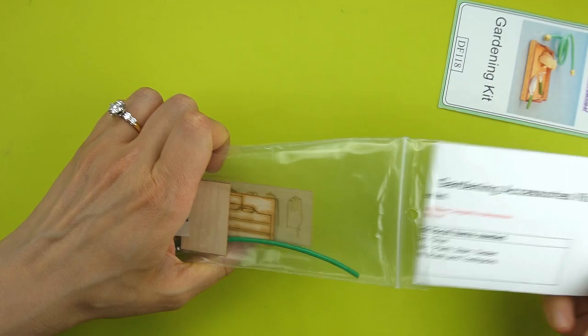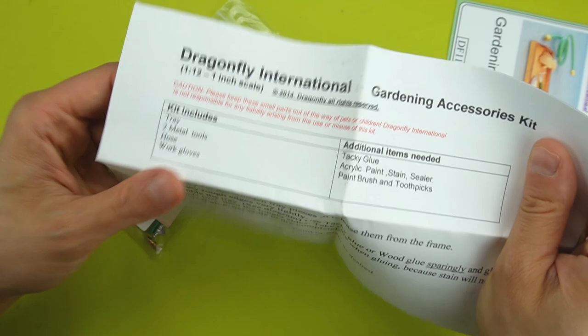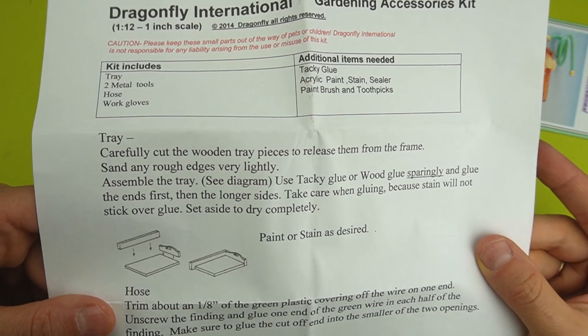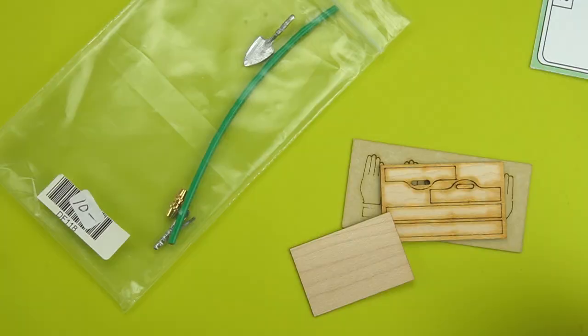I bought this kit for $10 at my local dollhouse store. I'll leave a link in the description. It comes with two metal tools, a tray, a hose, and some work gloves. It's a really easy kit and with a couple modifications it can look really great.